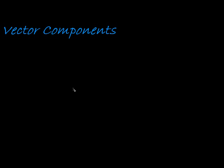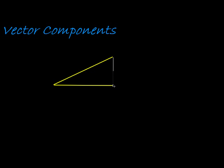Now we're going to look at finding vector components. Let me start by first explaining something else. Let's first just look at a right-angled triangle. A right-angled triangle has a hypotenuse — that's the slanted side — and then it has two other sides that form a 90-degree angle where they meet. This is called a right-angled triangle.